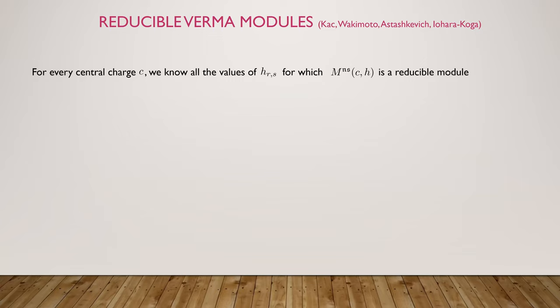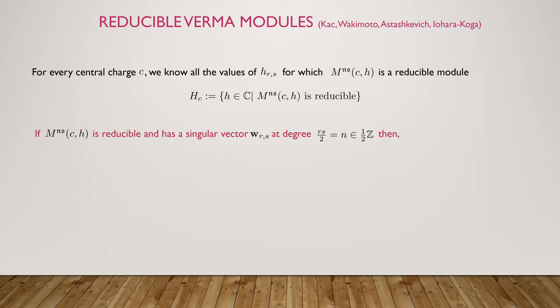We have information about reducible Verma modules and embedding diagrams between Verma modules. The following is true for the Neveu-Schwarz Lie superalgebra: if you have a map between two Verma modules it must be an embedding. We have a list of all the Verma modules that talk to each other, and we have information about singular vectors. If you are working with a reducible Verma module and it has a singular vector at degree rs/2, we know this is the shape of the singular vector.